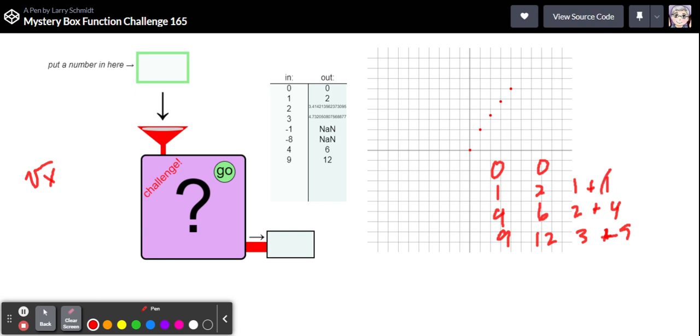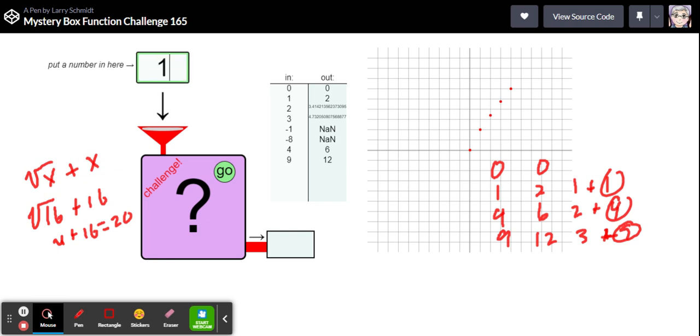It looks like we're taking the square root of whatever we put in and then we're adding again whatever we put in. So one way you could write that would be the square root of x plus x. Goodness, I think that might be it. Let's think of another point to test. So 16. If we put in 16, the square root of 16 plus 16, that should equal 4 plus 16, that should be 20. So let's try 16. And that is 20.